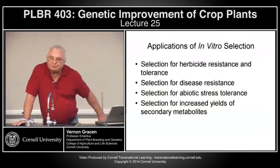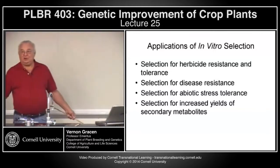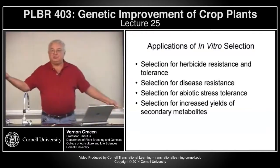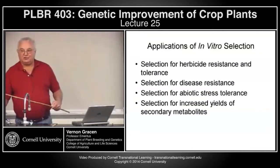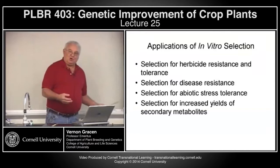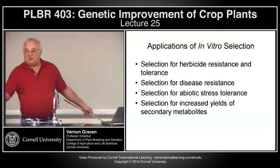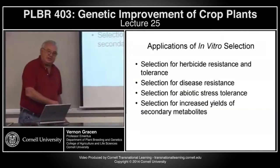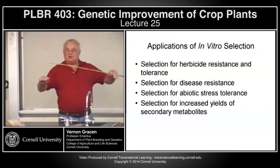The rationale is you dump aluminum into your callus cultures, and anything that can grow on aluminum in the culture at least has a chance to grow under high aluminum fields. Often they don't do that, and in fact a lot of the work selected in culture — once you regenerate those plants and take them to the field — you don't see the full levels of tolerance or resistance.